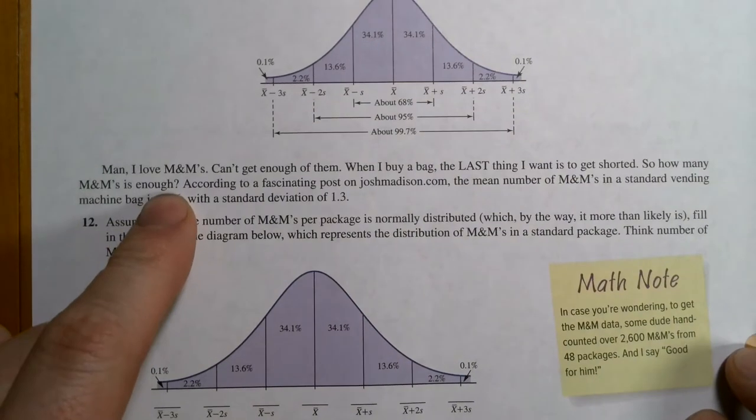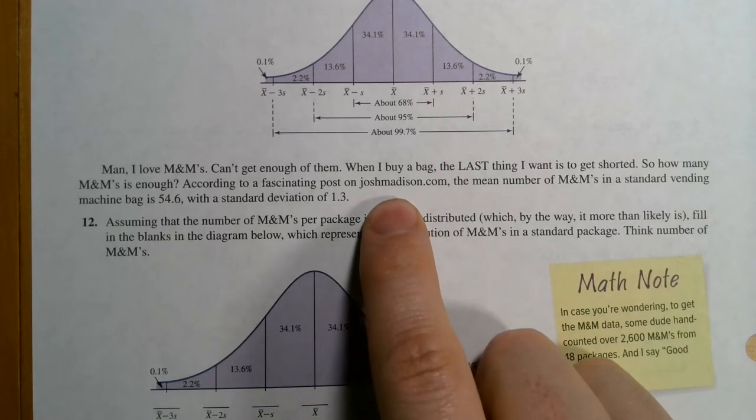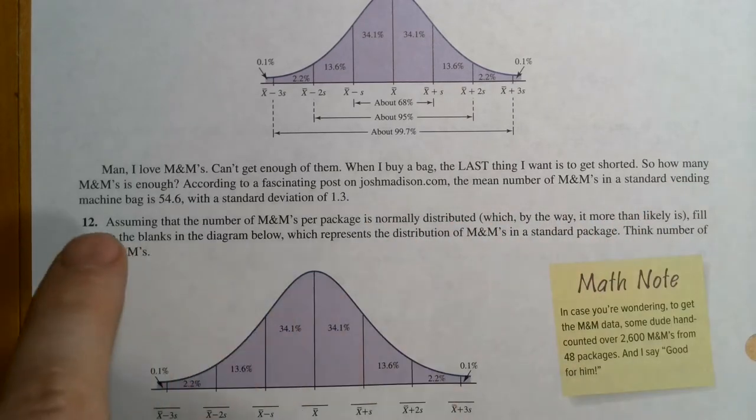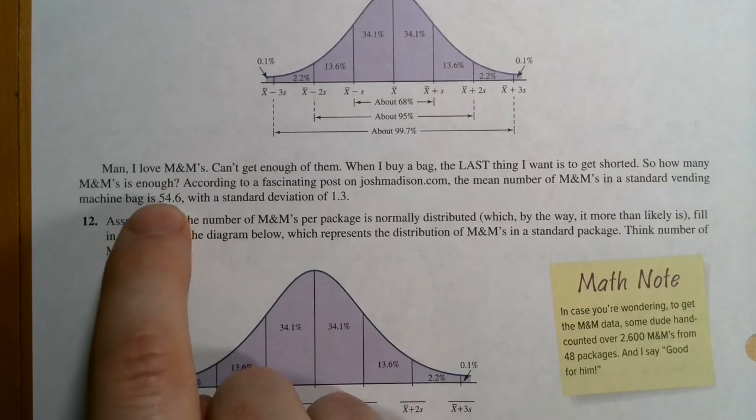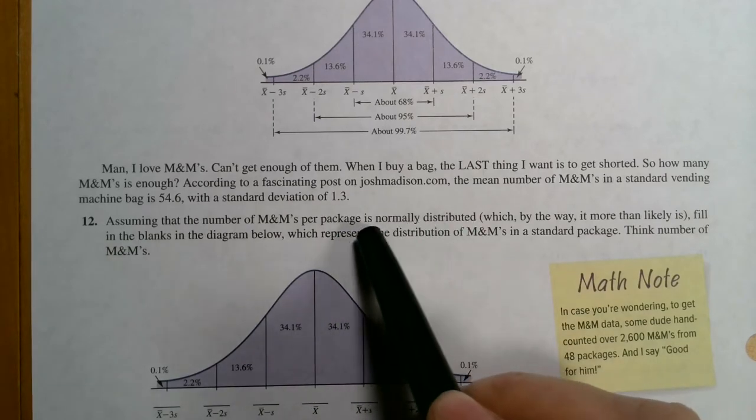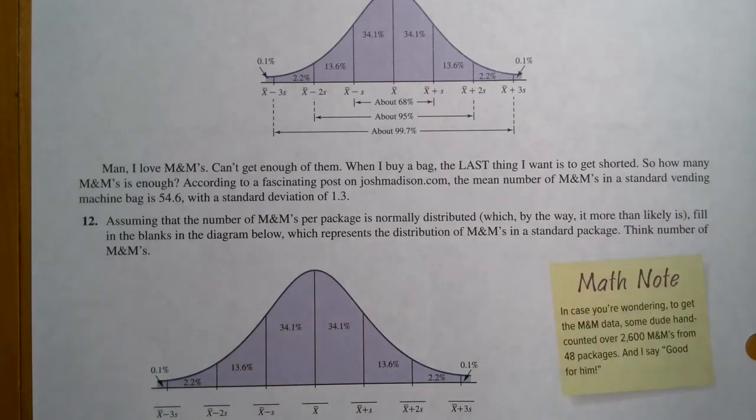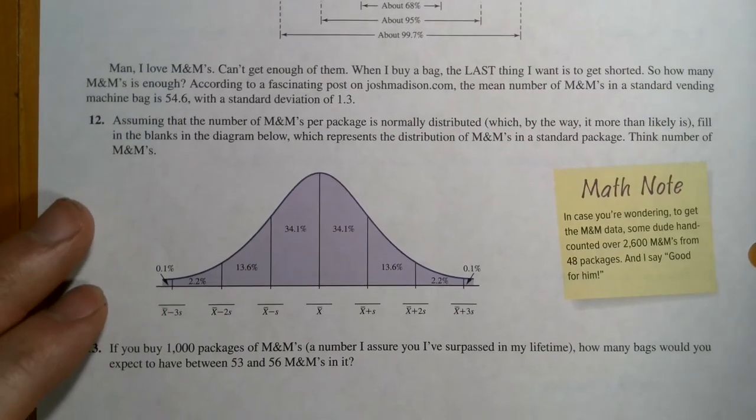So our author loves M&Ms. Maybe as much as I love Lego. I don't know. Probably not, because I really love Lego. Okay, so he can't get enough of them. And when he buys a bag of them, he does not want to be shorted. He wants his full amount. So according to this JoshMadison.com, the mean number of M&Ms in a standard vending machine bag is 54.6 with a standard deviation of 1.3. Now we're going to assume that packaging is normally distributed, and he says it more than likely is.